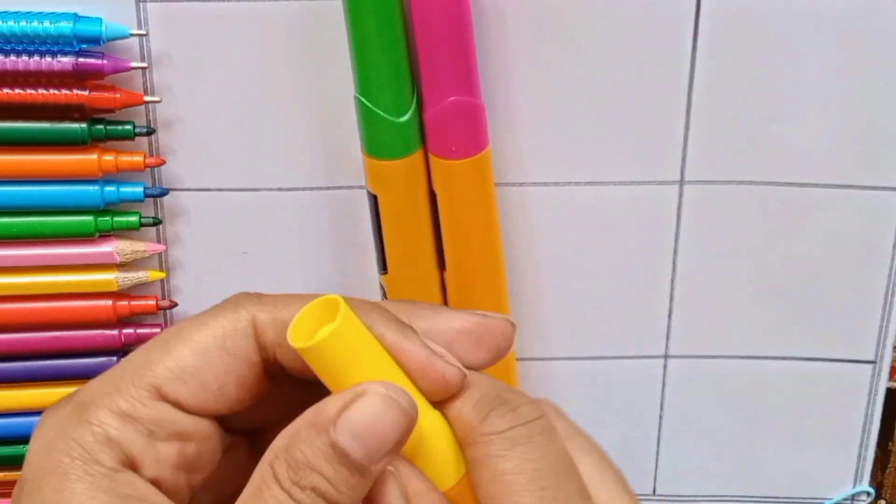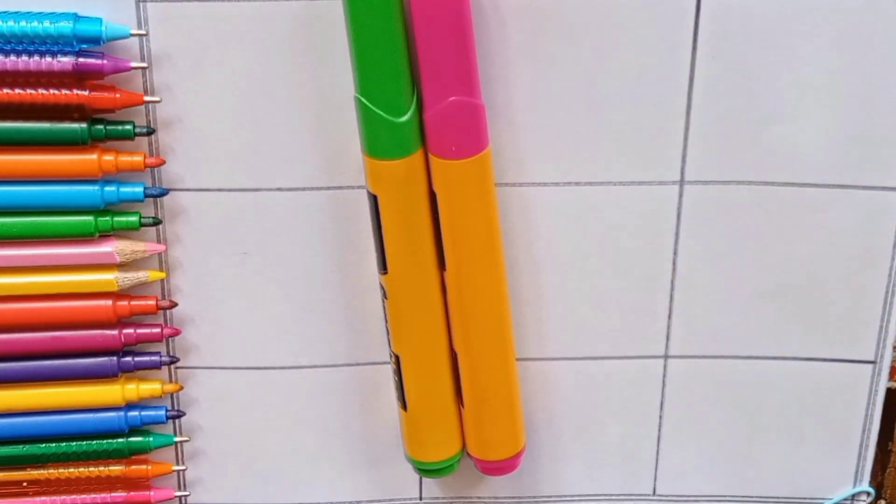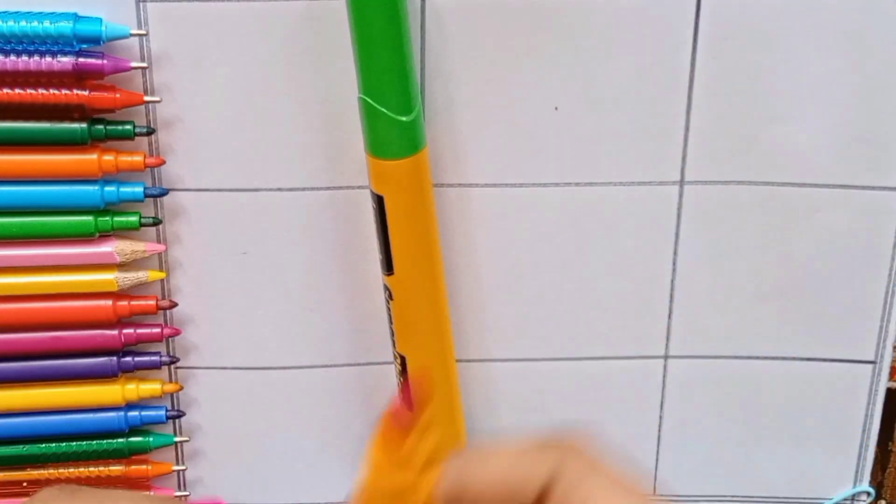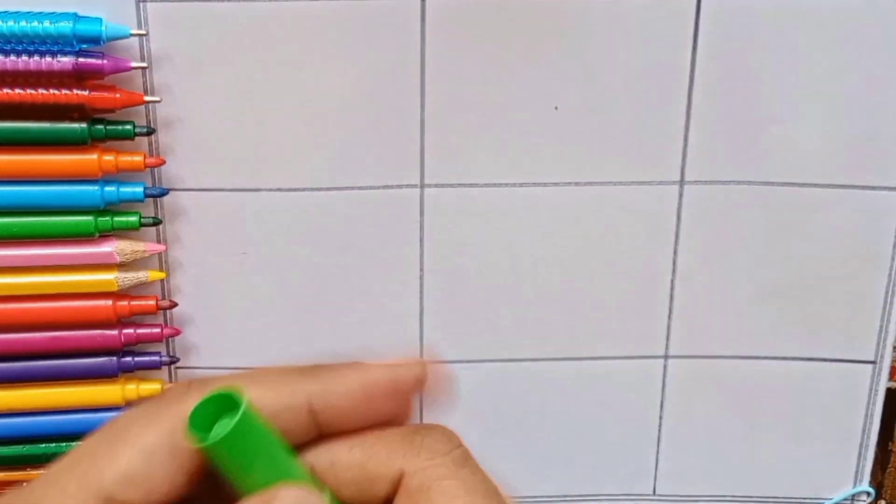Fifth color is yellow. Sixth color is pink. Seventh color is green.